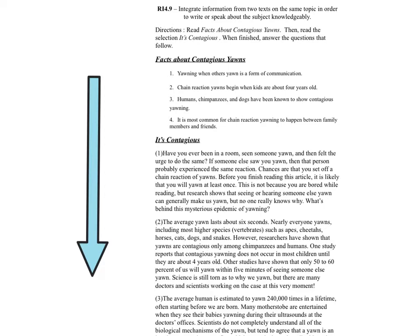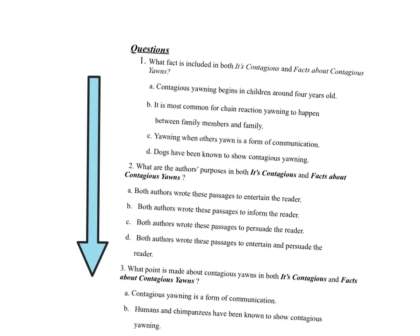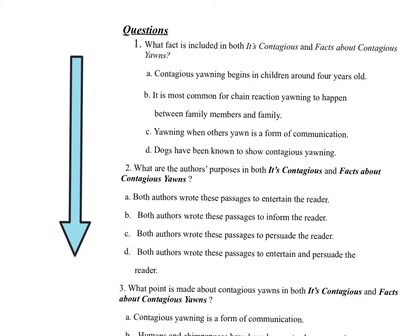The text was called 'Facts About Contagious Yawns.' It gives four points with facts about contagious yawns, and also another subheading called 'It's Contagious.' After reading, it gave you some questions to answer. The first question asks: what fact is included in both texts — 'It's Contagious' and 'Facts About Contagious Yawns'? On Tuesday we thought about what information is found in both texts, which is called integrating or synthesizing information. Use your chat bar to answer — when you hear the code word, type your answer for number one. Please take about two minutes to read the answer choices, then use the chat feature to choose the strongest answer.